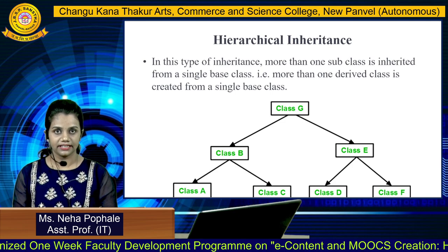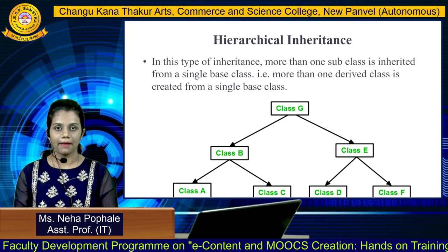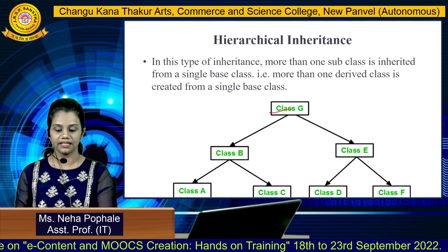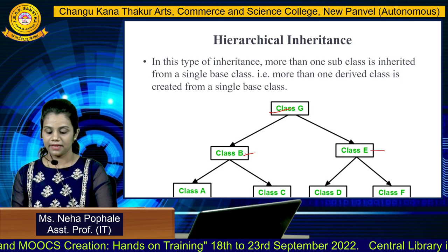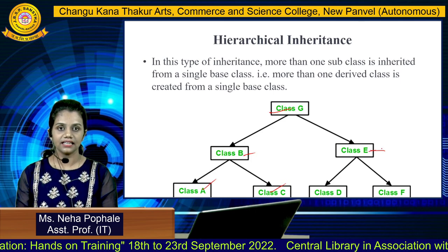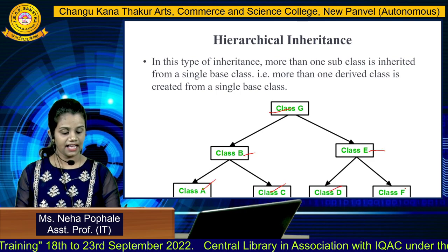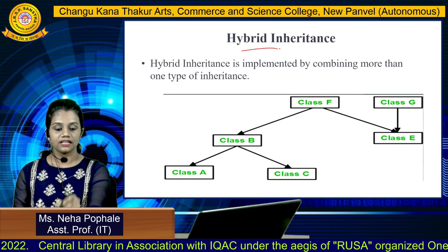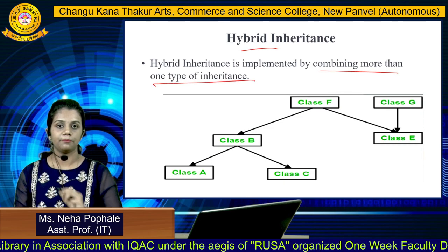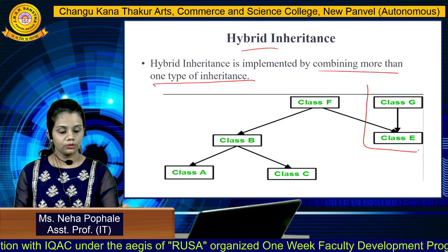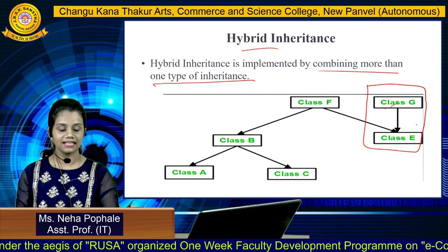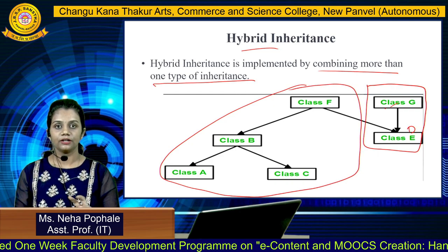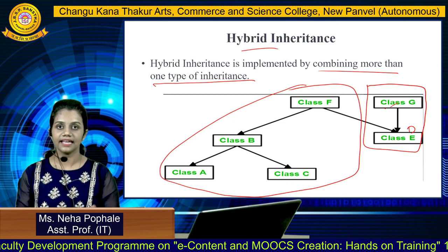Next is hierarchical inheritance. Inheritance is like a family tree. You can see class G becomes a parent class for two derived classes, class B and class C. Class B is the base class for class A and class C, and class E is the base class for derived class D and derived class F. Going to the last type, that is hybrid inheritance — hybrid inheritance means combining more than one type of inheritance. In the picture you can find single inheritance and hierarchical inheritance combined into one, which is named hybrid inheritance.